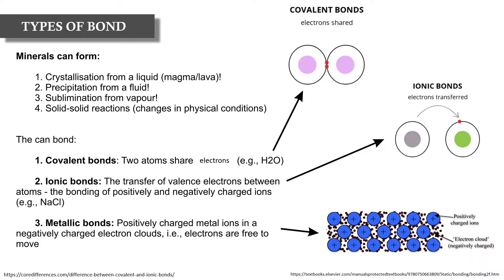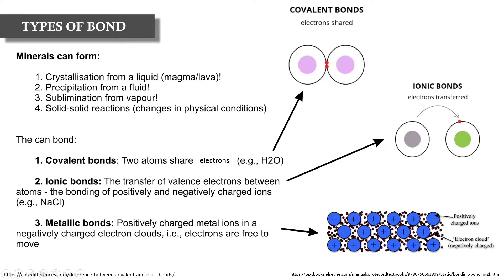Elements can bond in a few ways. First, we have covalent bonds whereby two atoms share electrons — a common example is water (H₂O). Second, ionic bonds involve the transfer of valence electrons between atoms, bonding positively charged cations and negatively charged anions; a good example is sodium and chlorine, with chlorine as the anion and sodium as the cation. Third, metallic bonds involve a group of positively charged metal cations sitting in a negatively charged electron cloud, with electrons freely moving around between the metal cations.